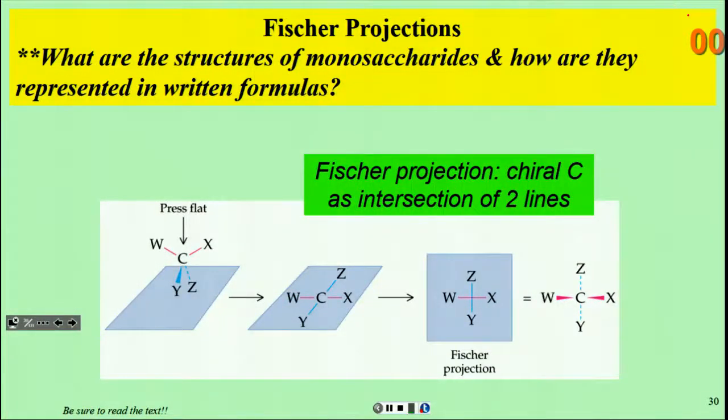The next portion of our discussion of carbohydrates involves describing the two-dimensional representation of three-dimensional molecules that have chirality. We're going to use Fischer projections. The chiral carbon is represented as an intersection of crossed lines. These 3D molecules are unique in their geometries around a chiral carbon, but there must be a way to represent them that we can make sense of, or at least use in a consistent way to be able to compare one structure to another.